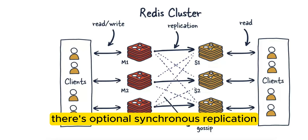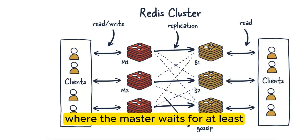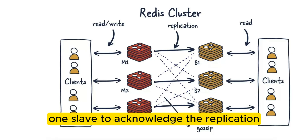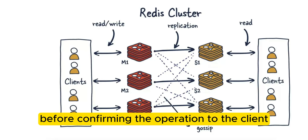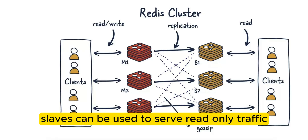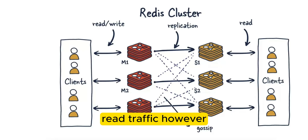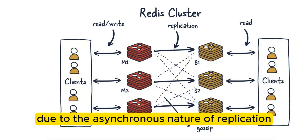There's optional synchronous replication. Redis cluster supports semi-synchronous replication, where the master waits for at least one slave to acknowledge the replication before confirming the operation to the client. To optimize performance, slaves can be used to serve read-only traffic, particularly useful when the cluster experiences heavy read traffic. However, reads can be slightly outdated due to the asynchronous nature of replication, which is known as eventual consistency.